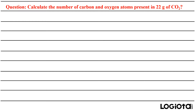The question is: calculate the number of carbon and oxygen atoms present in 22 grams of carbon dioxide. Here, the mass of carbon dioxide is given and we need to calculate the number of carbon as well as oxygen atoms present in that mass.